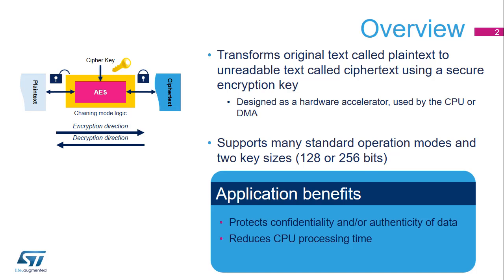The AES algorithm is a symmetric block cipher used to encrypt and decrypt information using a secret cryptographic key that is 128 or 256 bits long. Encryption converts data to an unintelligible format called ciphertext, while decrypting converts the ciphertext back to its original format, called plaintext. The AES peripheral is a NIST FIPS 197-compliant implementation of the AES algorithm, more efficient than a software library in terms of processing time. The AES peripheral supports multiple chaining modes, protecting data confidentiality or data confidentiality with authenticity, depending on the mode.